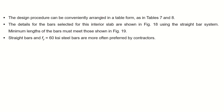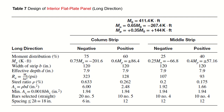The design procedure is arranged conveniently in Tables 7 and 8. Bar details for the interior slab are shown in figure 18, and minimum bar lengths must meet figure 19 for straight bars with fy = 60 ksi. For the interior flat plate panel in the long direction, M₀ = 411.4 kip-ft. This is first distributed into negative moment (65% of M₀) and positive moment (35% of M₀).